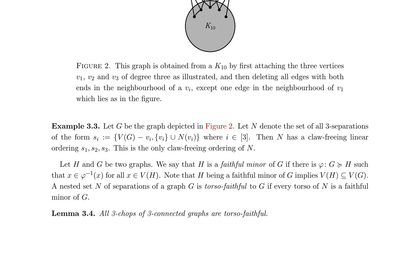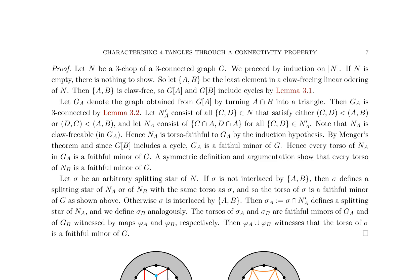The three-chop plays a central role in graph decomposition, particularly in the context of three-connected graphs. Furthermore, the notion of a faithful minor is introduced, which is closely related to the torso-faithfulness of a nested set of separations. In three-connected graphs, this property ensures that the decomposition of a graph into smaller components preserves the original graph's connectivity properties. The characterization of four-tangles through separations and their interlacing properties provides a powerful tool for understanding the structure of complex graphs.